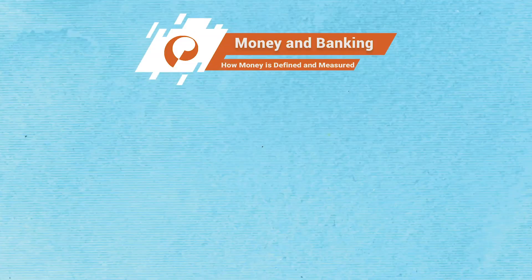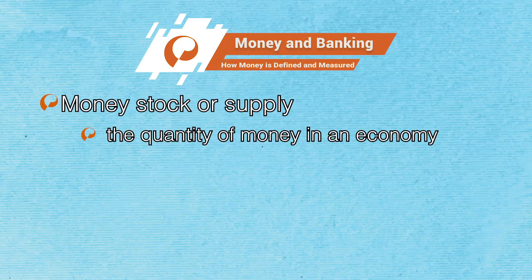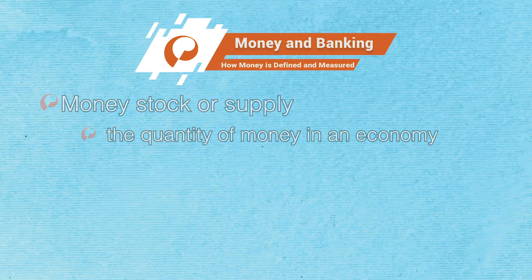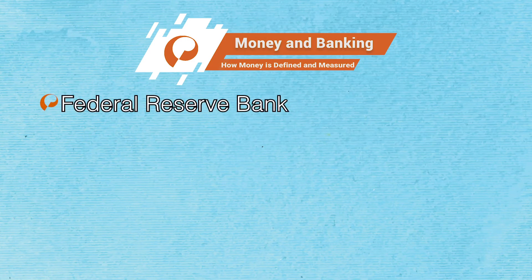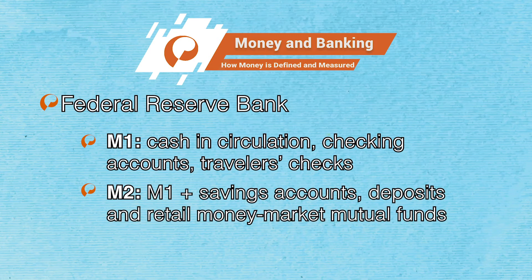The quantity of money in an economy is called the money stock or the money supply. In the United States, the Federal Reserve Bank uses two monetary aggregates. One, M1, which includes cash in circulation, checking accounts, and traveler's checks. Two, M2, which includes M1 and savings accounts, small-time deposits, and retail money market mutual funds.